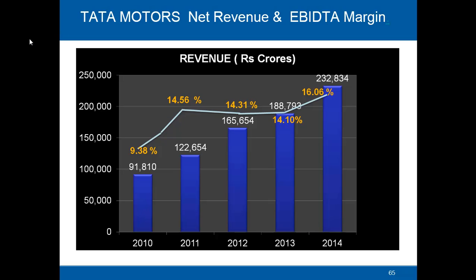In this graph we can see Tata Motors' net revenue and EBITDA margin from 2010 to 2014. In 2010, the EBITDA margin was 9.38%, then it went up to 14.5% in 2011, remained at around 14.31% in 2012, slightly declined to 14.1% in 2013, and finally went up to 16.06% in 2014. Clearly the EBITDA margin has risen from almost 9% to 16% over the period 2010 to 2014.